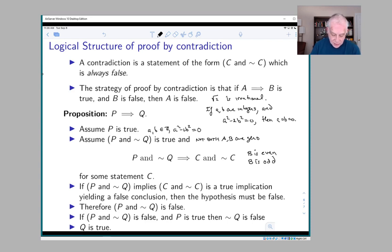That was what our argument showed. So the statement C is that b is even, and not C is that b is odd. So now we're in this situation where we have P and not Q implies a contradiction.